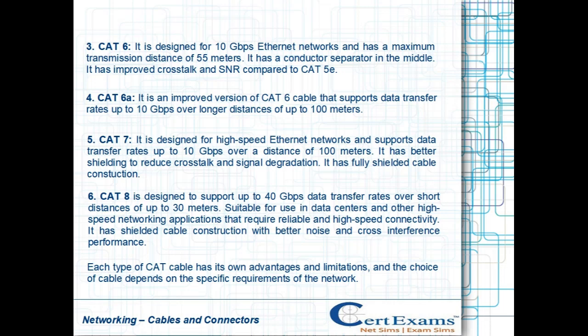CAT 6a is an improved version of CAT 6 cable that supports data transfer rates up to 10 gigabits per second over longer distances of up to 100 meters.